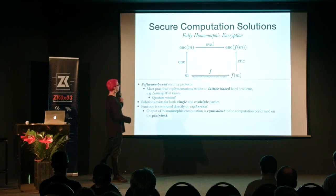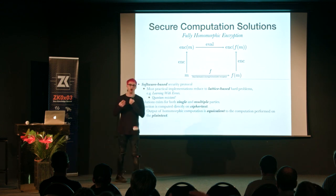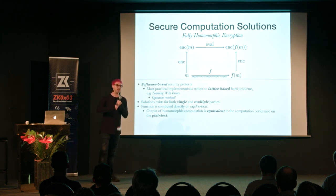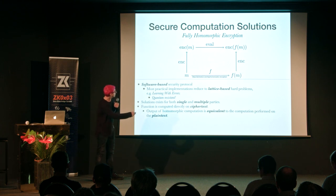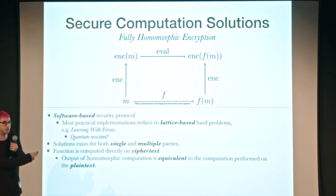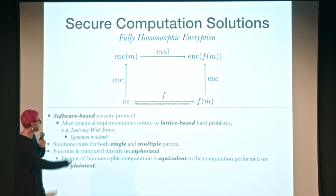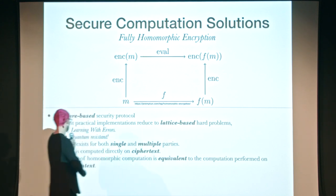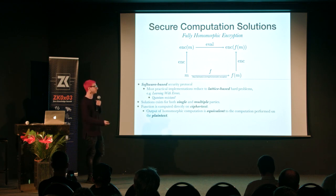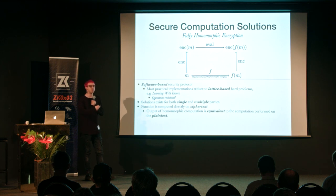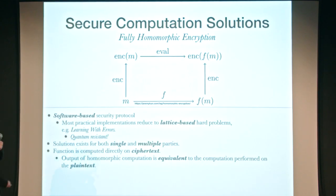In fully homomorphic encryption, the function is computed directly on the ciphertext — not on the plaintext. We can encrypt some plaintext M, pass it through an encrypting function, and get a ciphertext. We can evaluate any arbitrary function F on this, and the output is the function computed on the plaintext itself — the exact same output as if you had performed the function on the plaintext directly. We refer to this as computing in the homomorphic domain, meaning we compute some function or circuit while the data is encrypted.